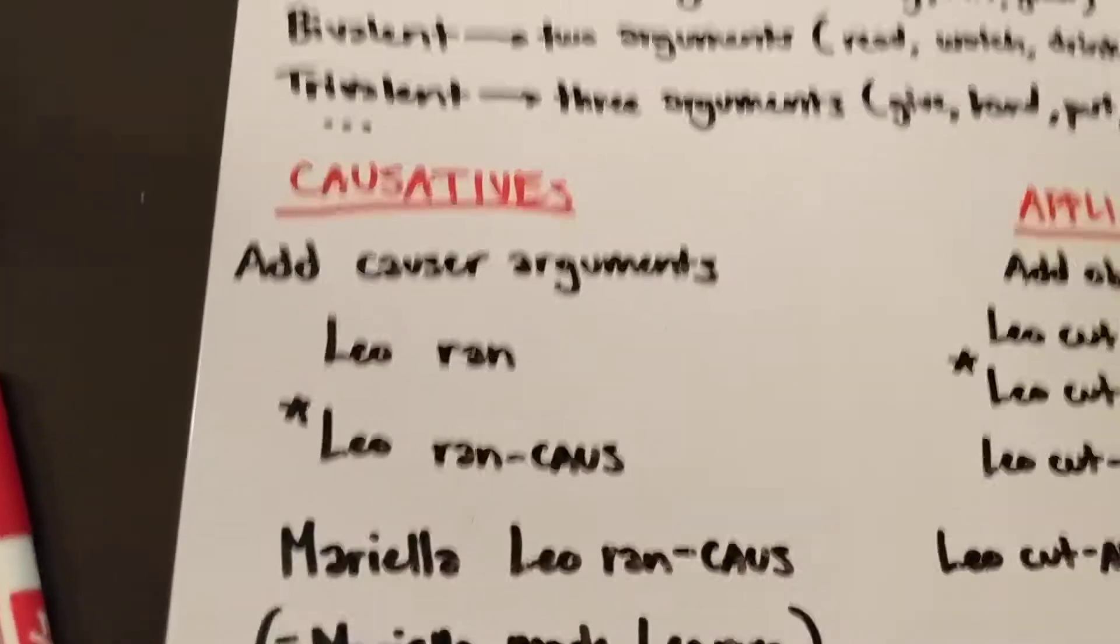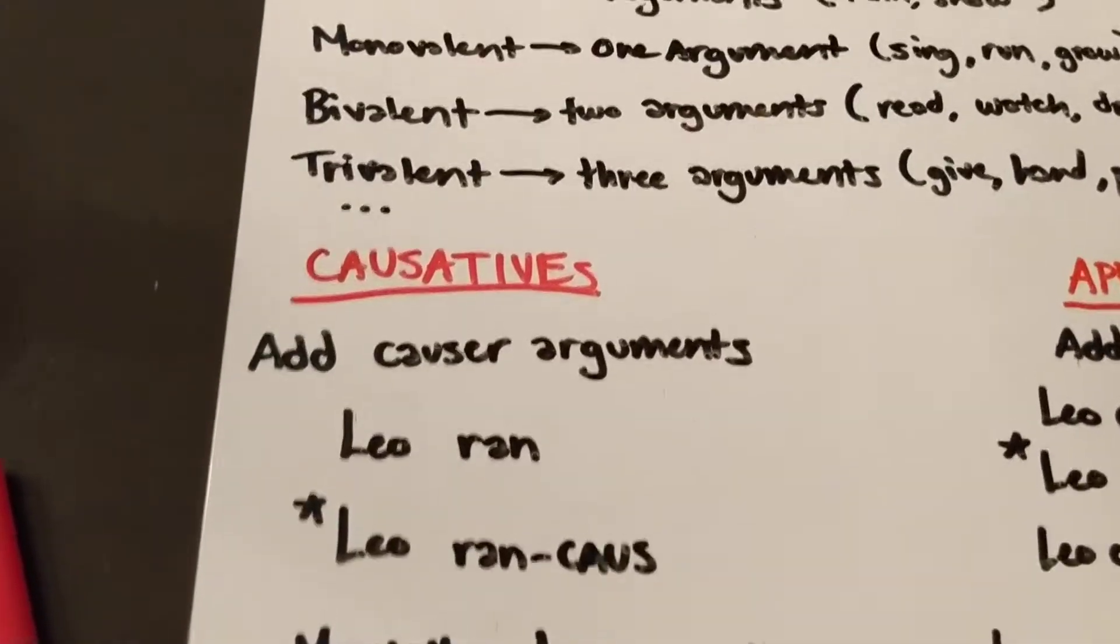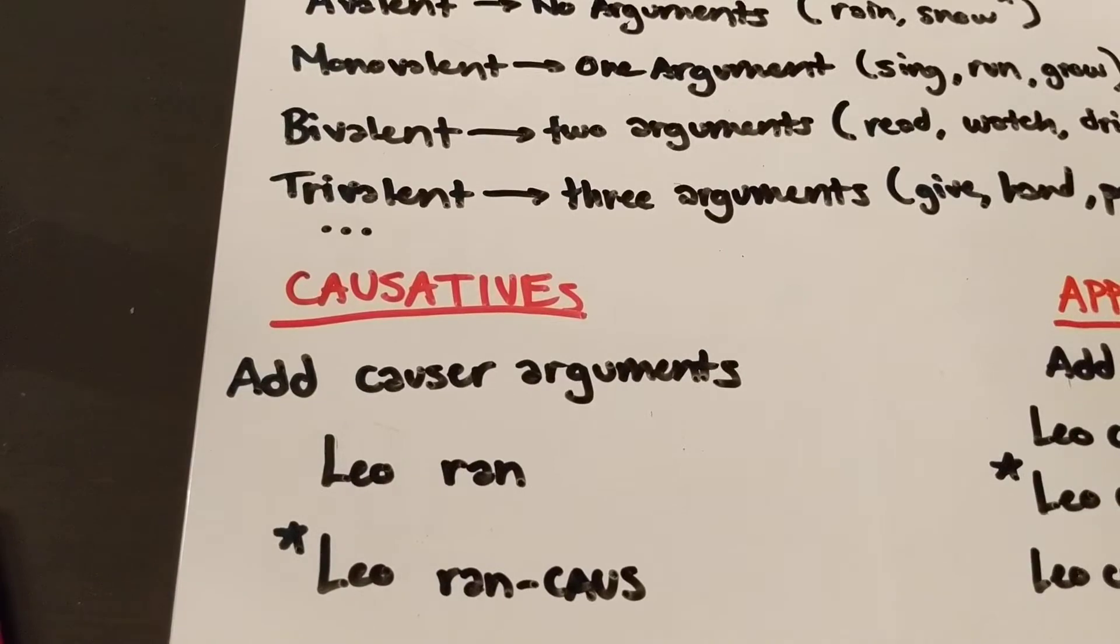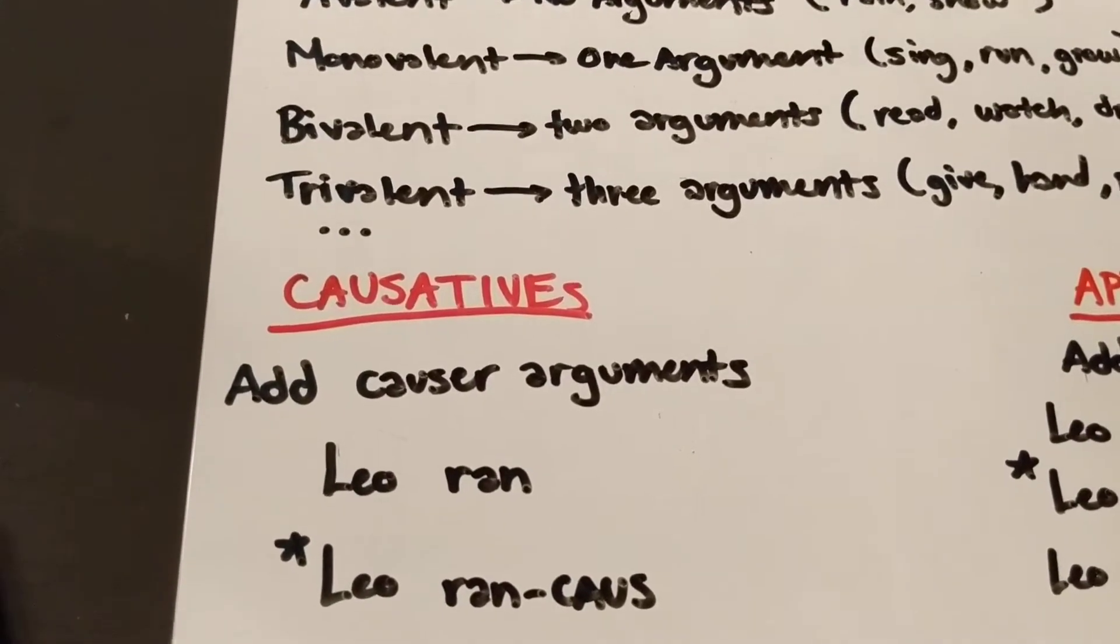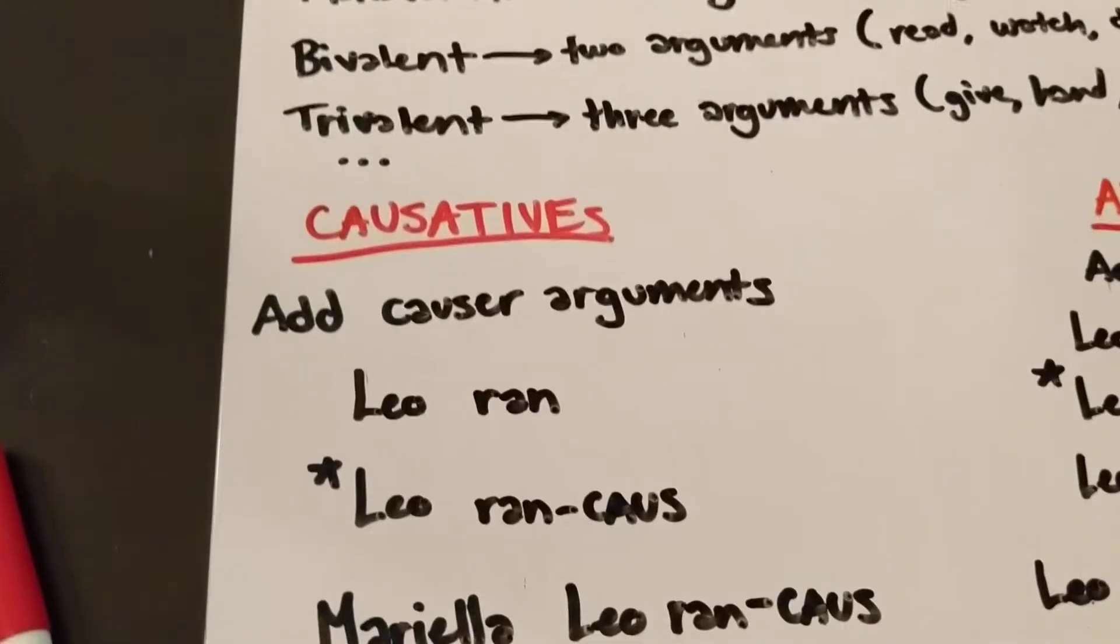So the first route is by using some sort of causative. A causative is a way that you add causing arguments. These are usually like adding extra subjects is what they look like morphologically.